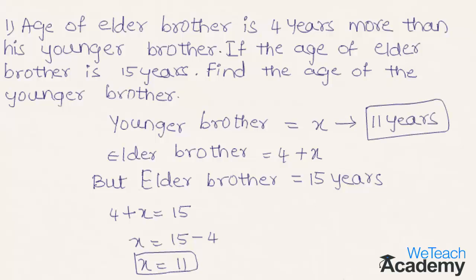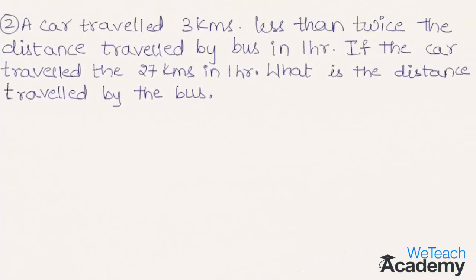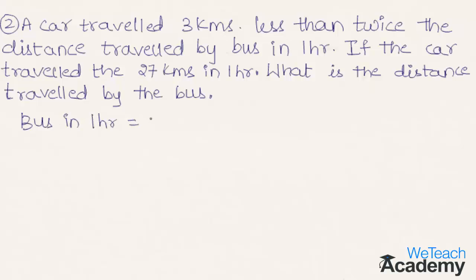Now let us proceed and solve another example. A car travelled 3 kilometres less than twice the distance travelled by a bus in 1 hour. If the car travelled 27 kilometres in 1 hour, we have to find the distance travelled by the bus. Let us consider the distance travelled by the bus in 1 hour as x.